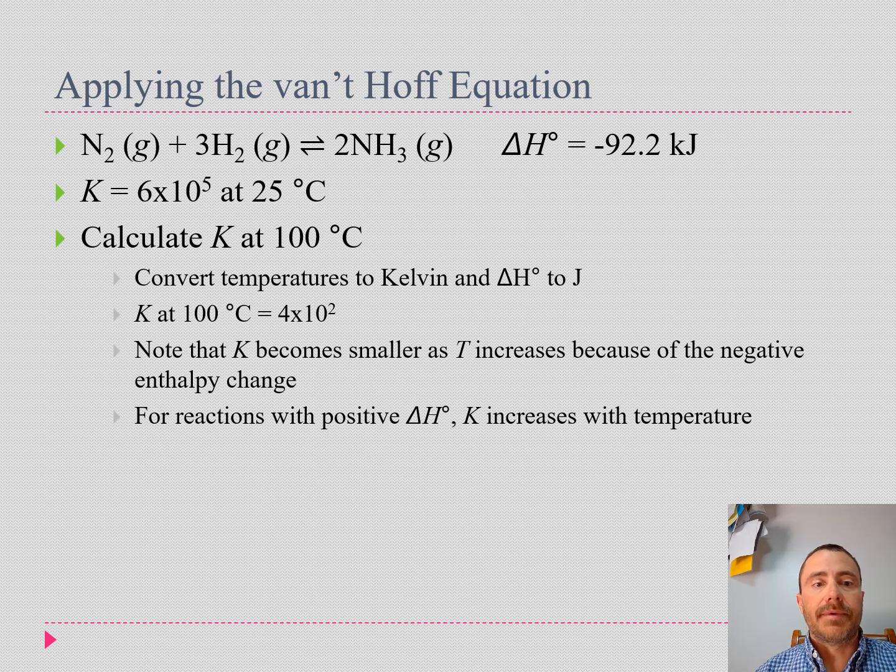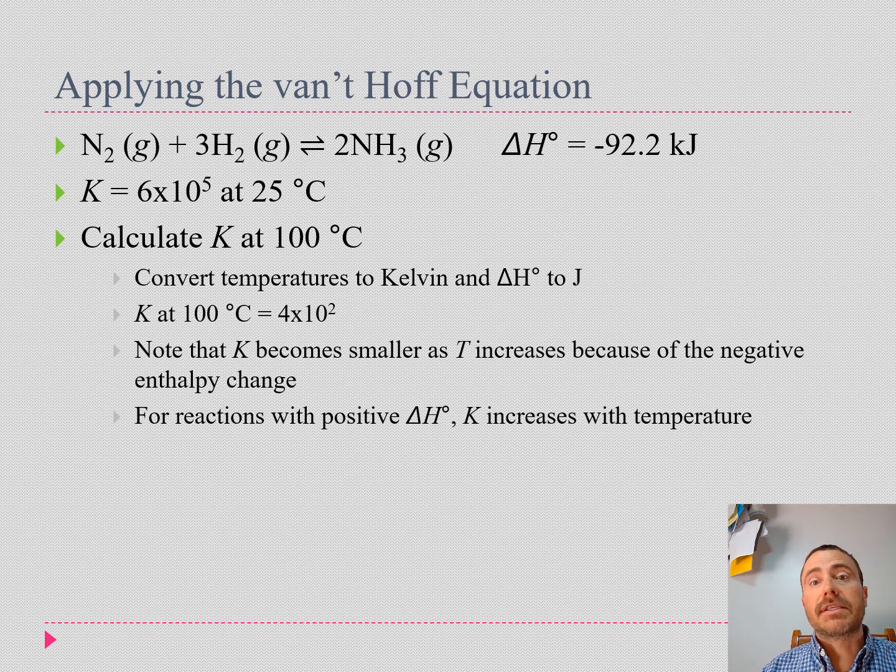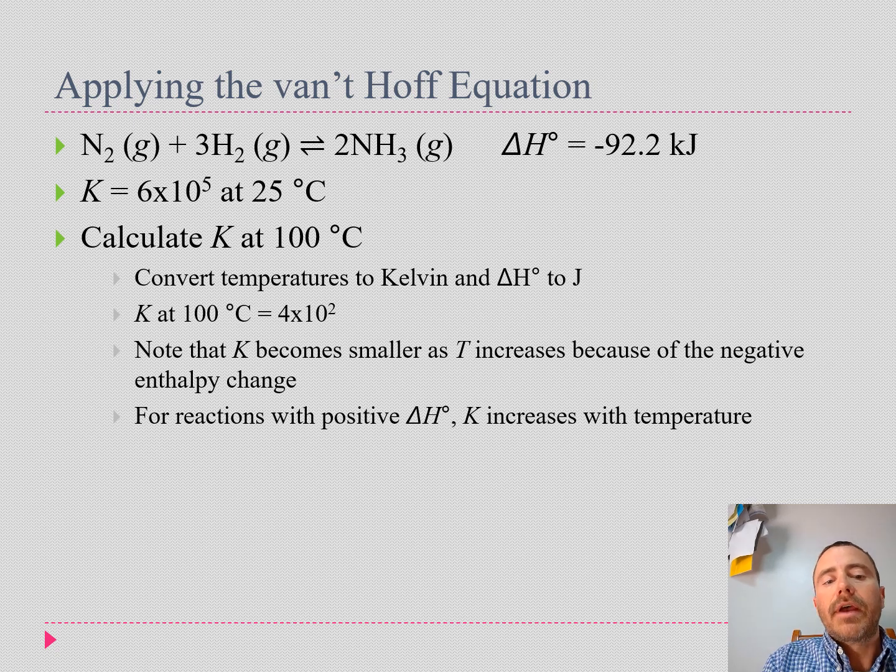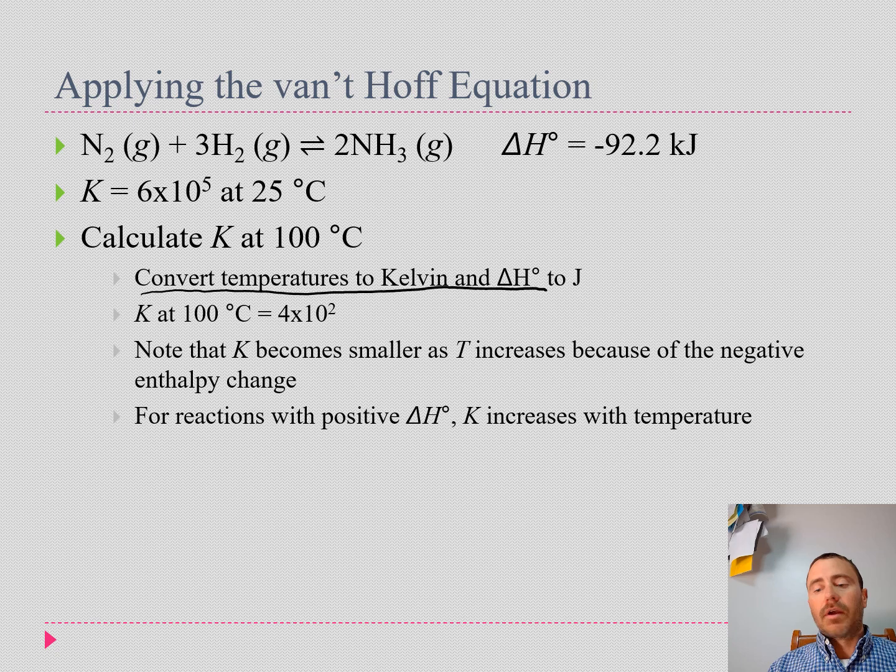I've also given the equilibrium constant as 6 times 10 to the 5th. What if we wanted to calculate K at 100 degrees Celsius? We could do that, and we're going to do a sample problem where we actually work through the values. We want to make sure when we do these problems to convert our temperatures into kelvin. In this case, we're either going to convert our enthalpy into joules, or we're going to convert our R into kilojoules.